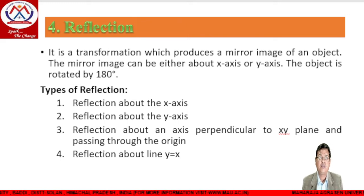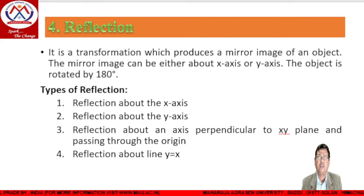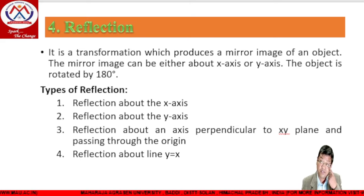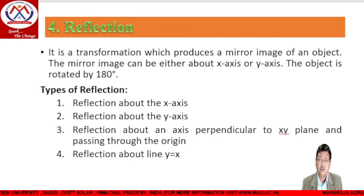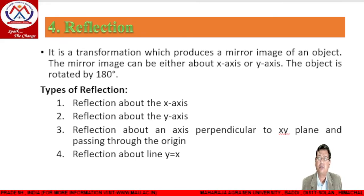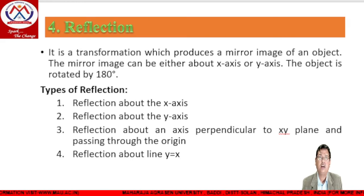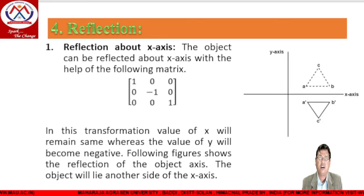The fourth type of transformation is reflection. Reflection is the transformation where we produce a mirror image of an object. The mirror image can be about the x-axis or y-axis. The object is effectively rotated by 180 degrees. The types of reflection include: reflection about the x-axis, reflection about the y-axis, reflection about an axis perpendicular to the xy-plane passing through the origin, and reflection about the line y = x.